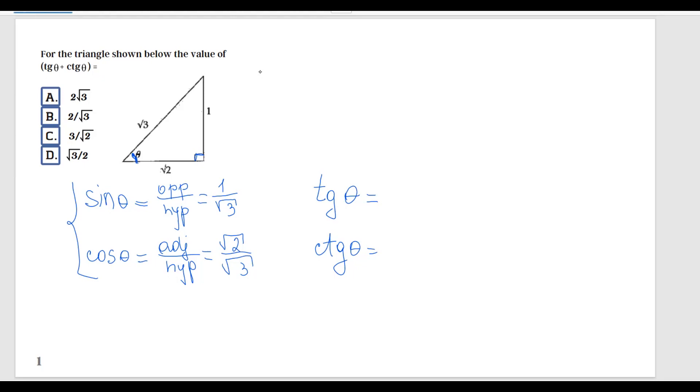For tangent of theta in this triangle, it's going to be opposite, so we're going to have similar to the sine, opposite over, and instead of hypotenuse we have over adjacent.